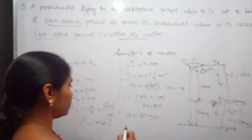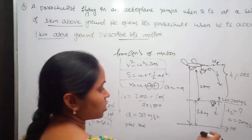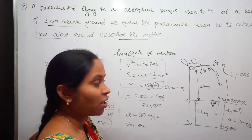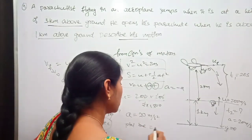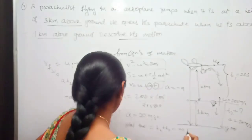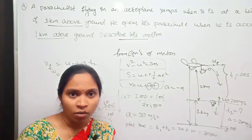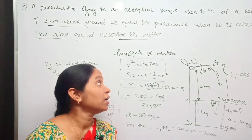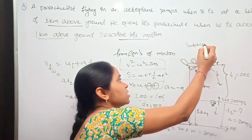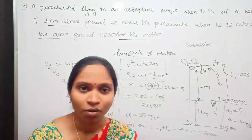The total time taken by the parachutist to reach the ground after jumping from the airplane is t1 + t2 = 20 + 10 = 30 seconds. Here I will end our lecture. Whoever hasn't subscribed to my channel, please subscribe, like, and share with the maximum number of people. Bye!